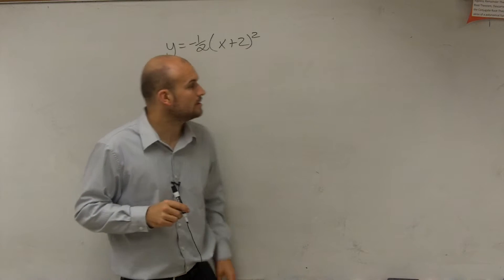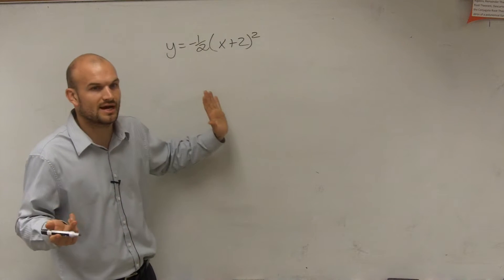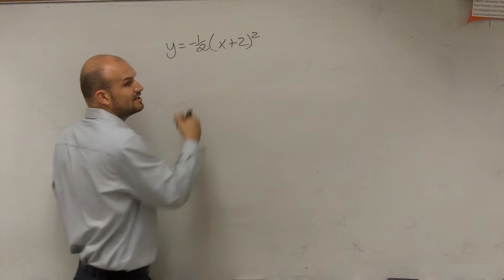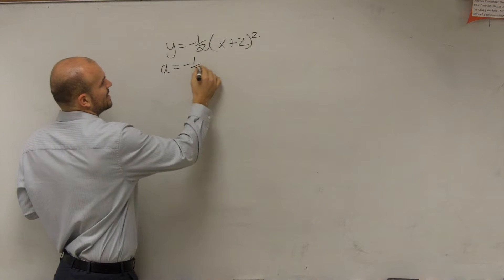So now this is in vertex form, what I can now simply look at is say, all right, well, now I know it's in vertex form, I just need to figure out what all my important elements are. So I have a, which equals negative 1 half.